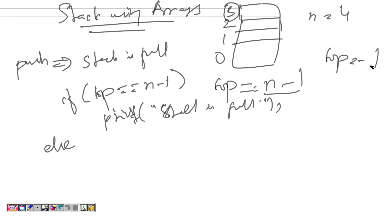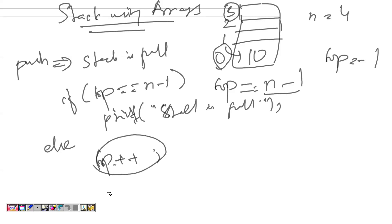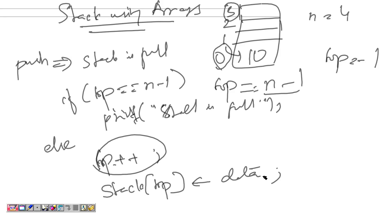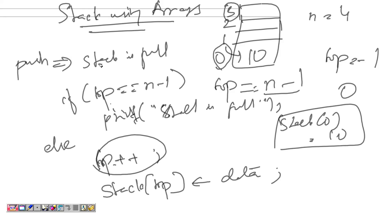If the stack is not full, initially top has a value of minus 1. If I want to insert 10 inside the stack at index 0, first I have to increment the top value. After incrementing top, I can insert the element: stack[top] = data. So stack[0] = 10. You can insert elements until the stack becomes full, which is when top equals size minus 1.